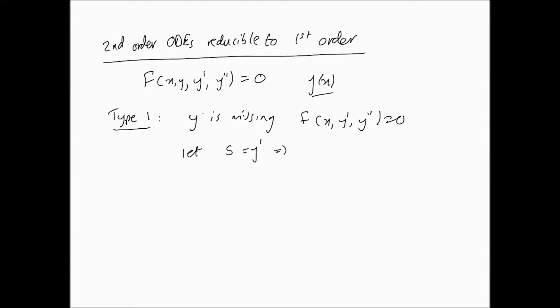What we do is we say let some s equal y dash. This implies that s dash equals y double dash. And that reduces the equation to just F(x, s, s') = 0. So you get a first order differential equation in s. You solve that, and then you go back to this and solve another first order differential equation, and that gives you your answer.